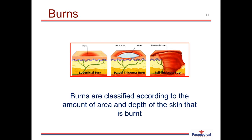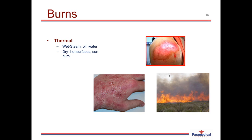Burns have three different classifications depending on how deep the burn is. A superficial or first degree burn affects the top layer. A partial thickness or second degree burn is when water blisters are formed on the skin. A full thickness or third degree burn goes right through the top layers of skin and can extend through fat tissues, muscle, and down to bone. Burns can be caused by thermal energy such as hot steam, oil, or water; dry hot surfaces; sunburn; or different chemicals — both strong acids and strong alkalines can cause severe burns.